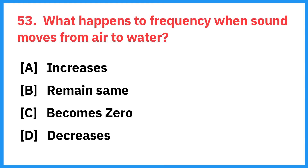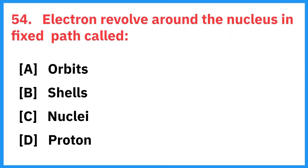What happens to frequency when sound moves from air to water? Right answer is it remains the same. Electrons revolve around the nucleus in fixed paths which are called? Right answer is orbits.